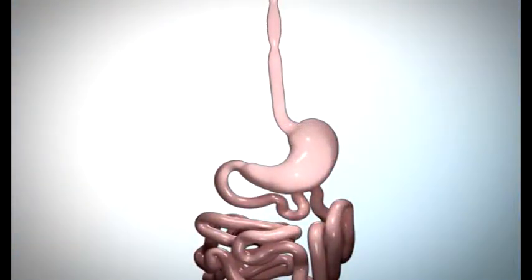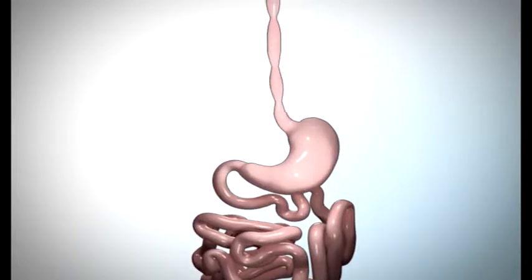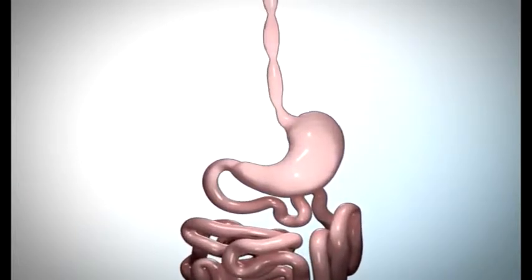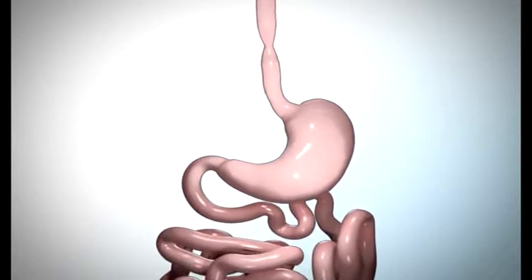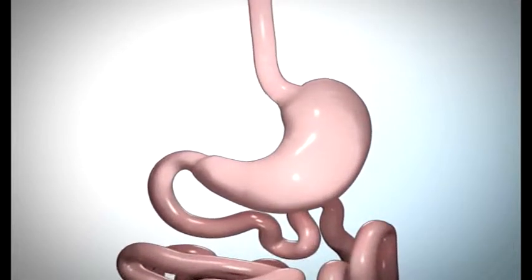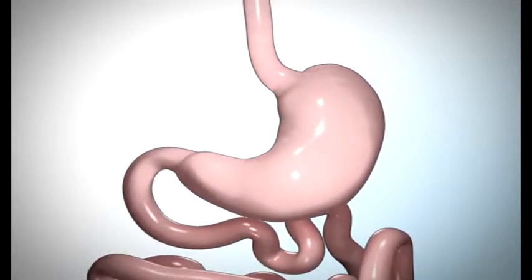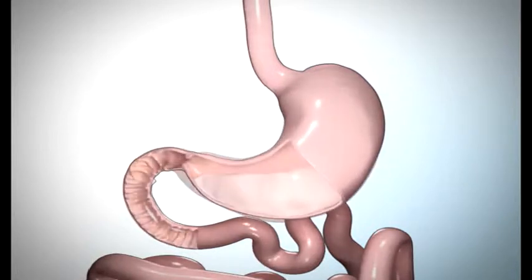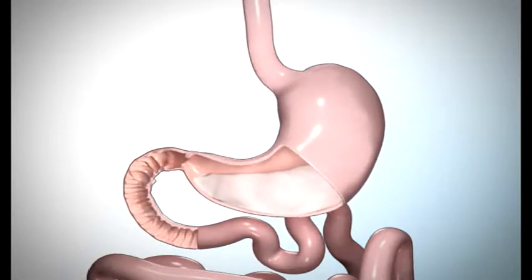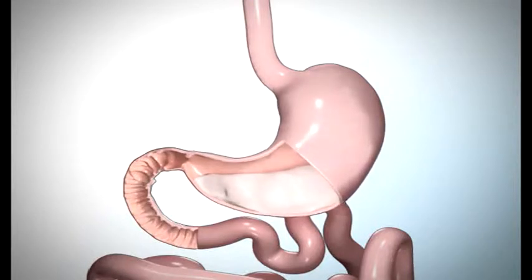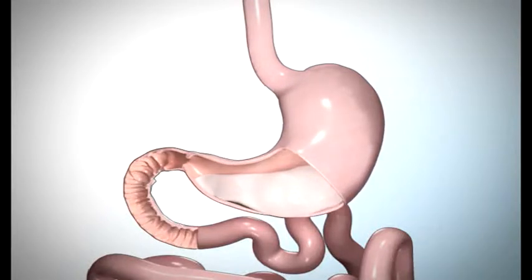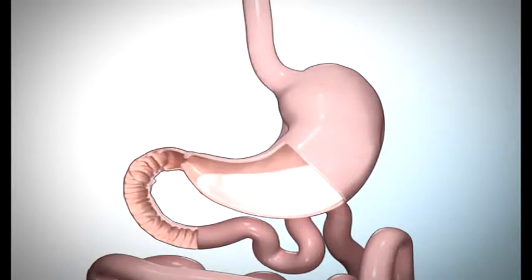This educational video will explain the normal process of digestion, the sleeve gastrectomy procedure, and how weight loss will occur upon completion of the surgery. Currently, your stomach can hold about 40 ounces of food. Once in your stomach, the food combines with digestive juices containing acids and enzymes that help break it down into smaller particles.